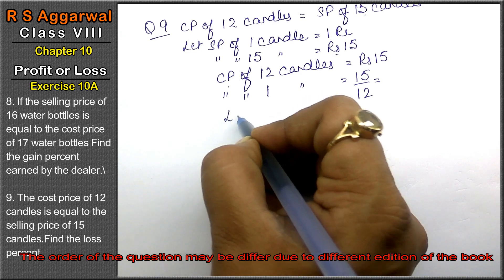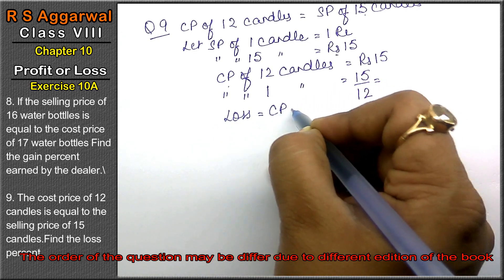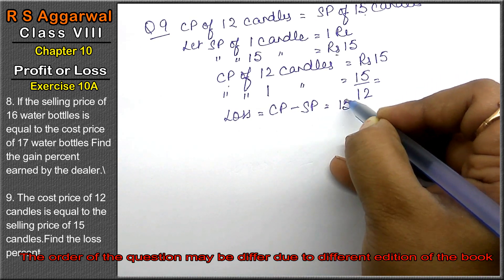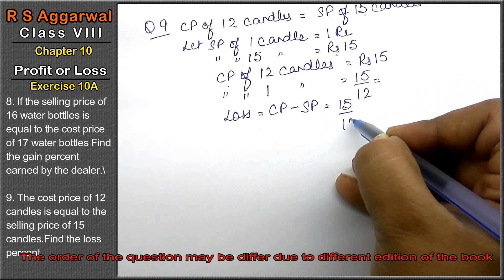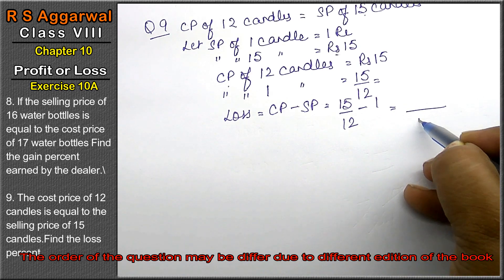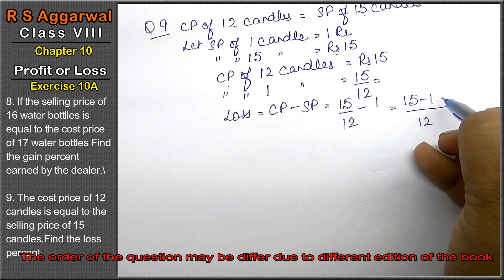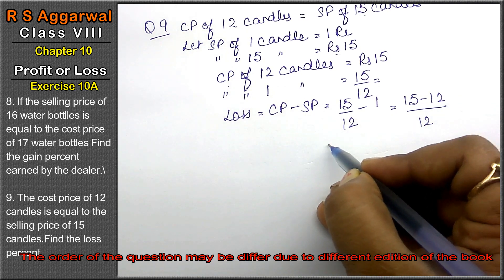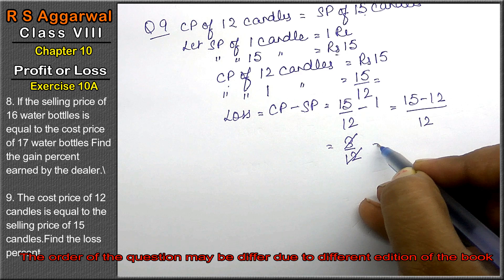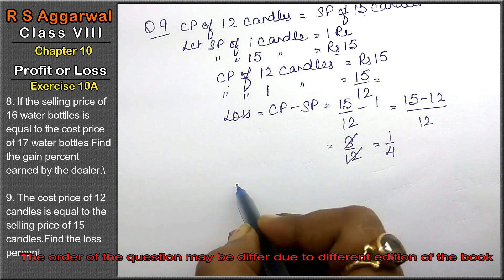Since CP is greater than SP, we have a loss. Loss equals CP minus SP, so that is 15 upon 12 minus 1. Taking LCM of 12: 15 minus 12 equals 3 upon 12, which simplifies to 1 upon 4. So the loss is 1 upon 4.